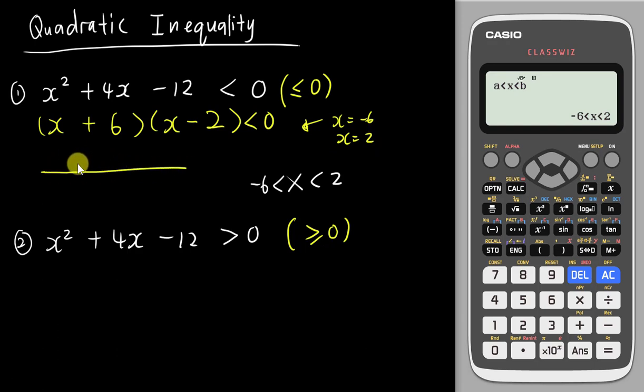When I draw out the diagram, negative 6 goes here and 2 goes here. Less than means below the x-axis. If you see the curve carefully, below the x-axis is only this part. The x value for this part is between negative 6 and 2. Therefore this answer is correct.